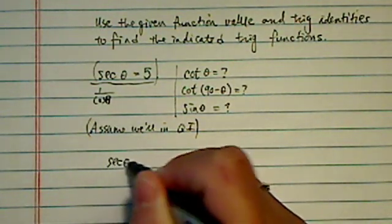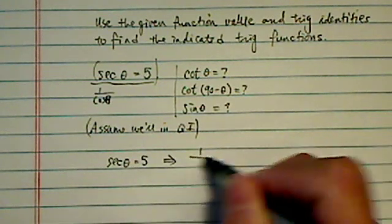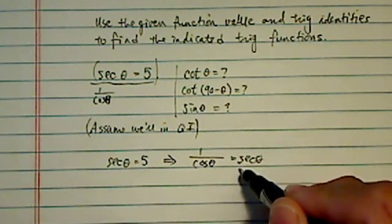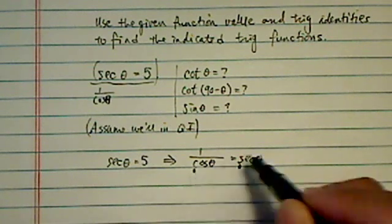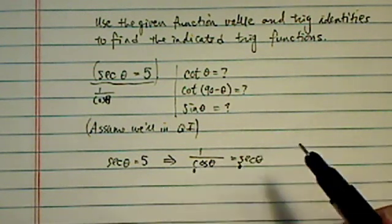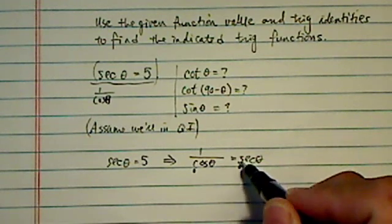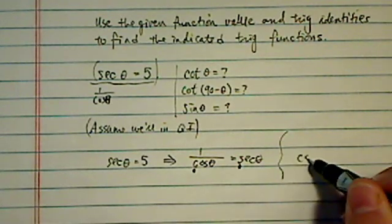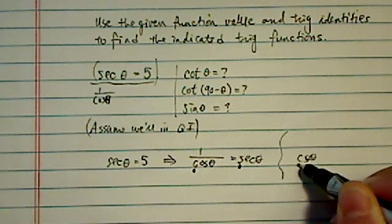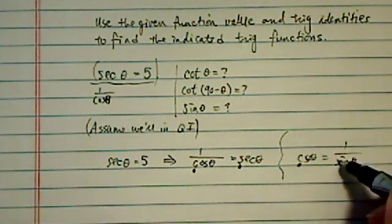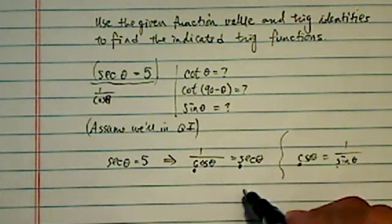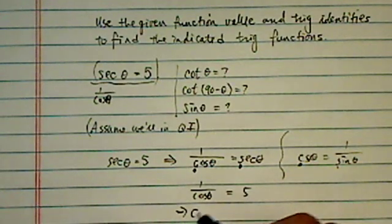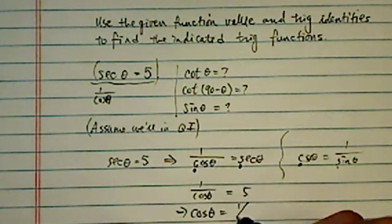Alright, so secant theta equal to 5. From there, using definition, it's 1 over cosine, which is equal to secant theta. A side note, if you're having trouble remembering this, C and S is always the opposite. So if the secant theta starts with S, then it's 1 over cosine theta starts with a C. So since we're given this one equal to 5, then 1 over cosine theta is equal to 5, which is saying cosine theta is equal to 1 over 5.